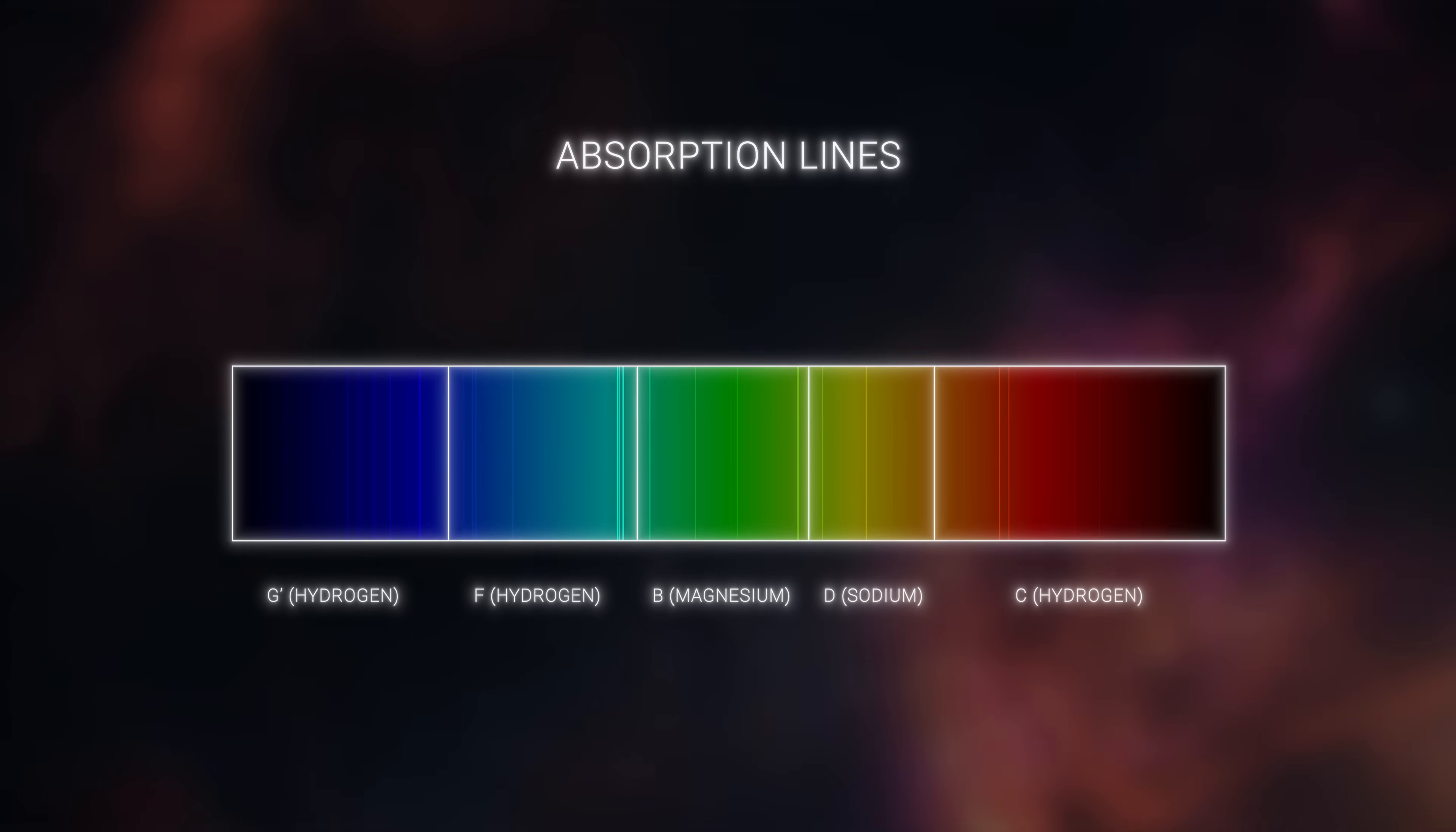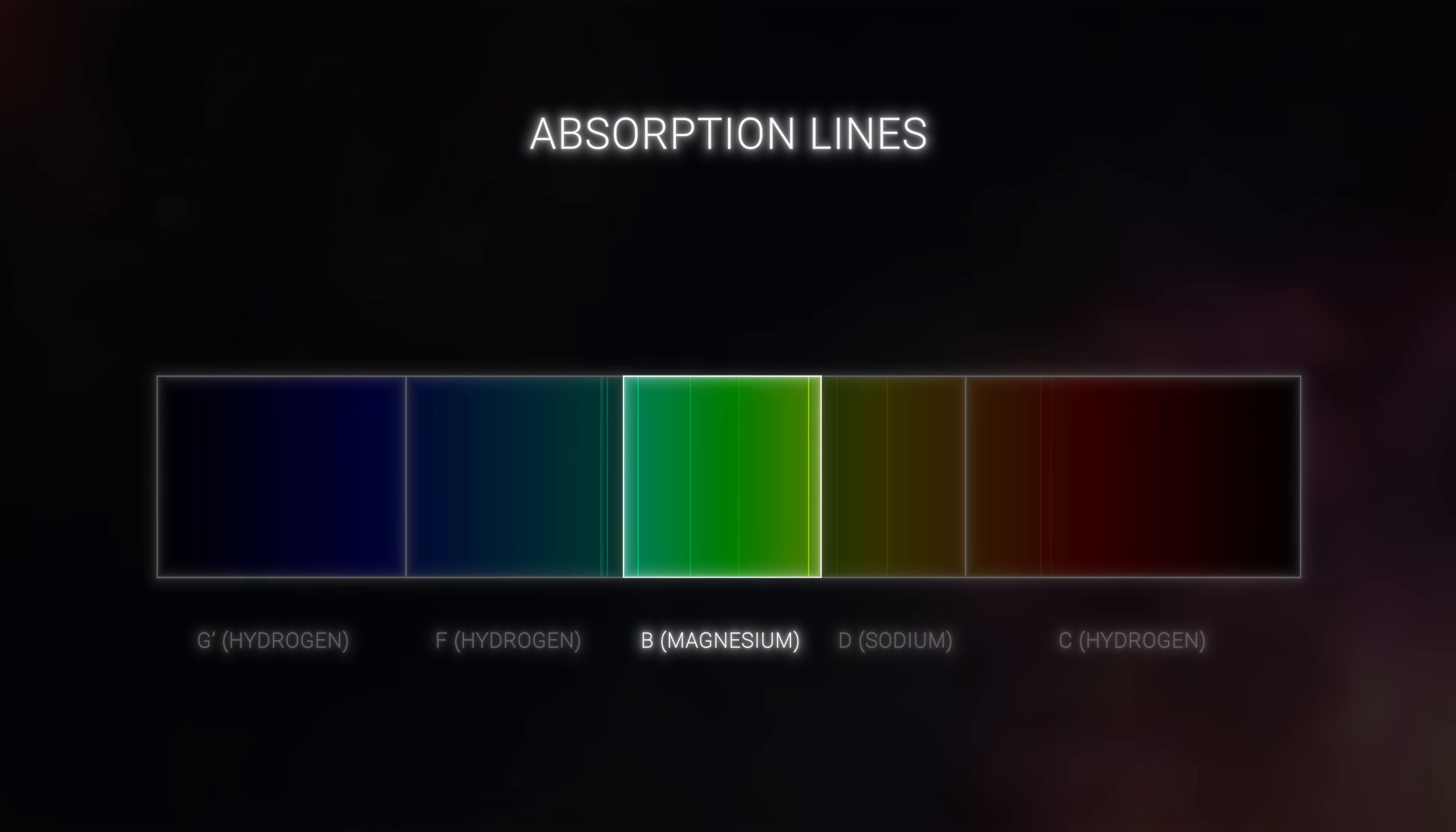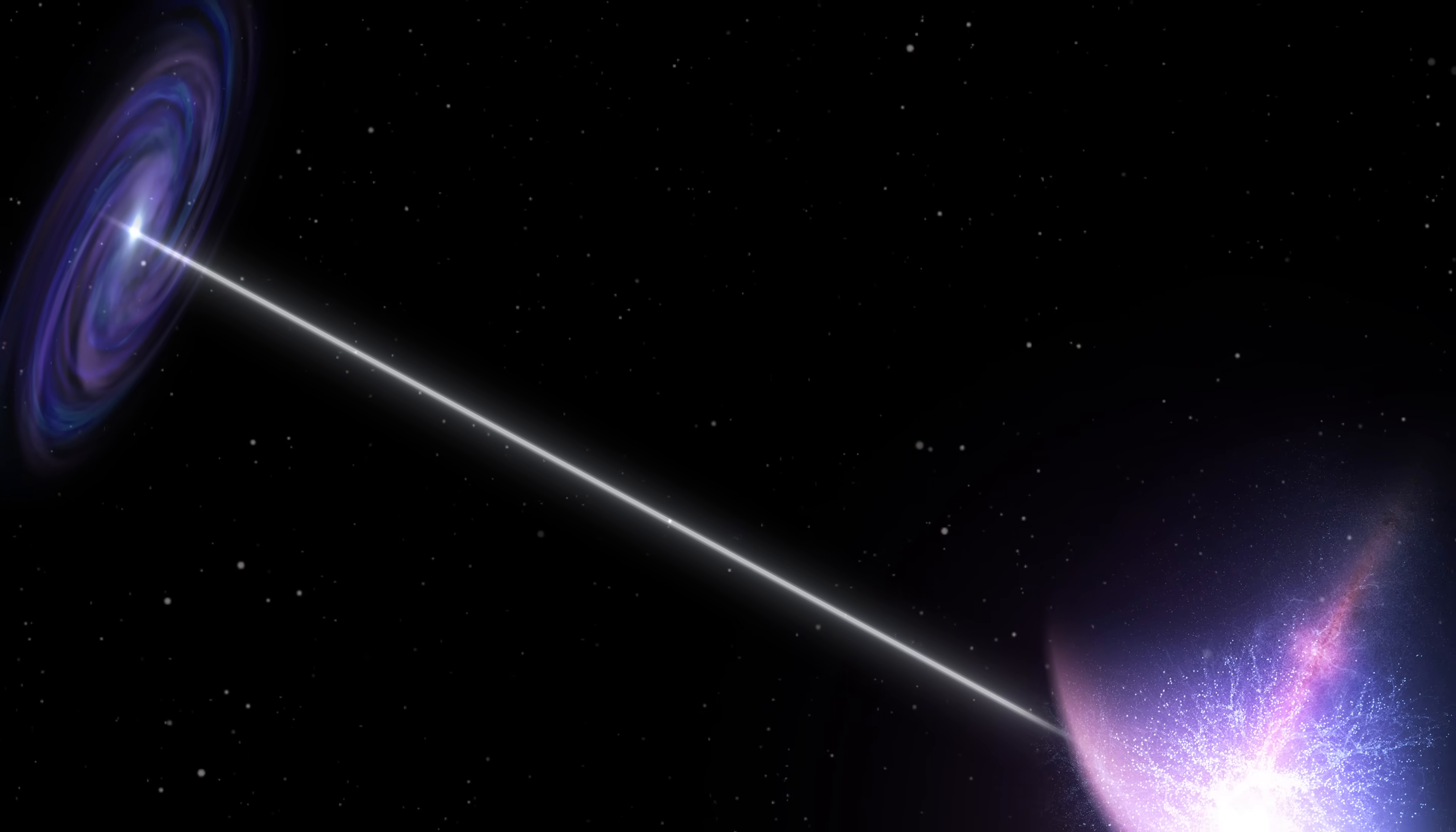One of the key tools in this space detective work is the study of absorption lines, specifically magnesium-2 absorption lines. When the light from a quasar passes through a region of space containing magnesium-2, the matter absorbs certain wavelengths of light.